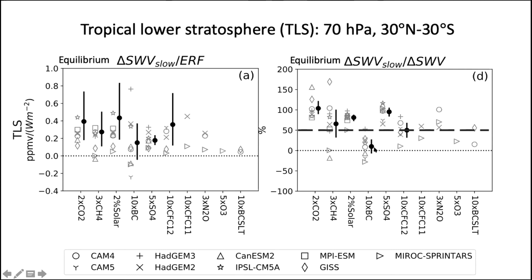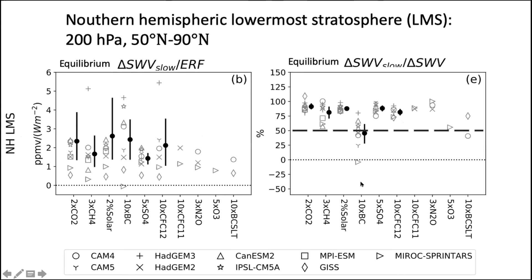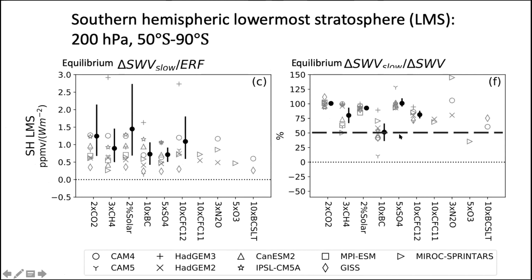However, for 10× black carbon, the slow response shows very small contribution to the total response — we'll discuss that later. For the lowermost stratosphere in both the northern and southern hemispheres, we see the same conclusion: the slow response magnitude shows general agreement across climate perturbations, and contributes more than 50% — sometimes close to 100% — of the total response. Our results show that the slow response plays a dominant role.